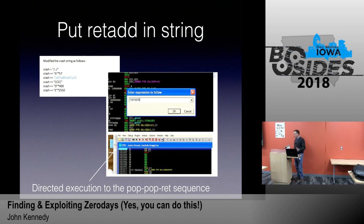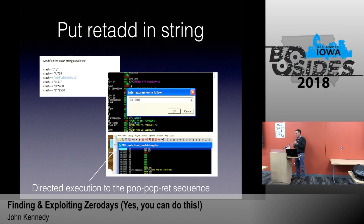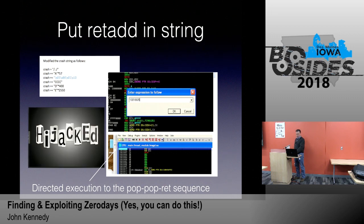I modified my string with the return address where the B's used to be and directed execution. My binary debugger set up a breakpoint, sent it, and execution stopped at the beginning of that pop-pop-ret. And that means I now control the execution of this program — so now it's getting exciting.